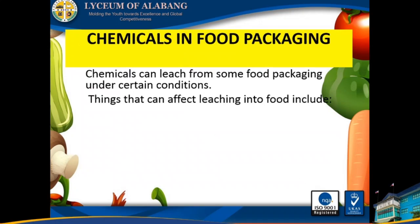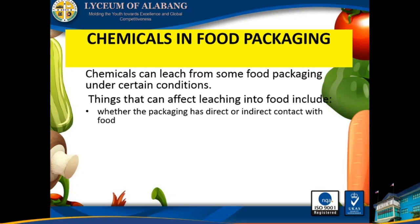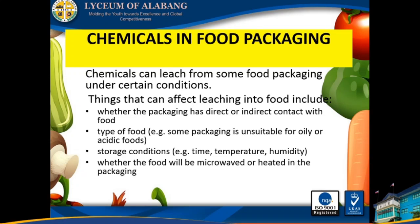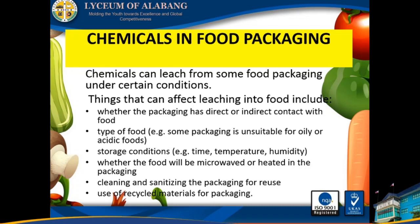Chemical leaching from packaging into food is also a concern. Chemicals can leach from some food packaging under certain conditions. Things that can affect leaching into food include whether the packaging has direct or indirect contact with food; the type of food — for example, some packaging is unsuitable for oily or acidic foods; storage conditions such as time, temperature, and humidity; whether the food will be microwaved or heated in the packaging; and cleaning and sanitizing the packaging for reuse and use of recycled materials for packaging.